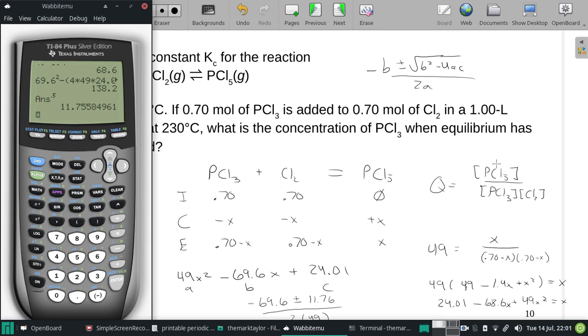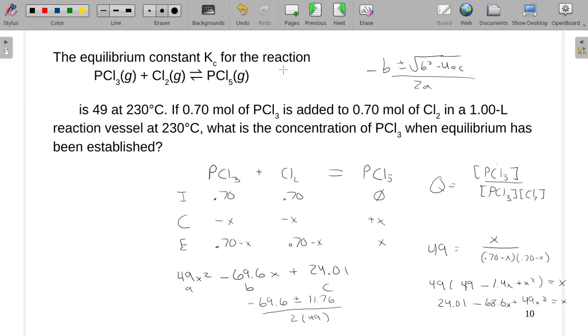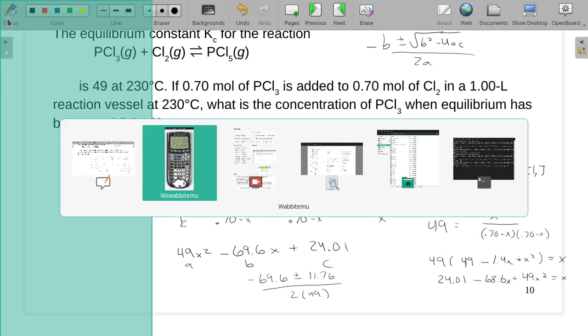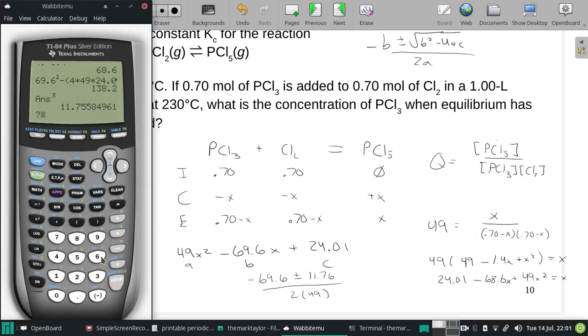Oh great, I got that too low, don't I? That's okay, I can fix this. Negative 69.6 minus 11.76 is this big number. Divided by 2 times 49 gives me this.